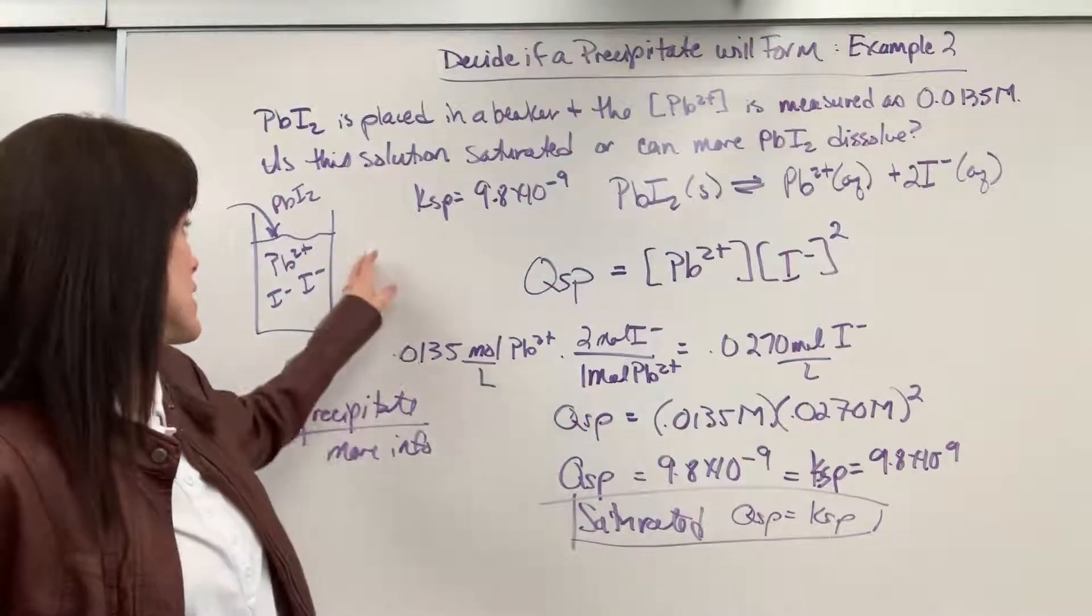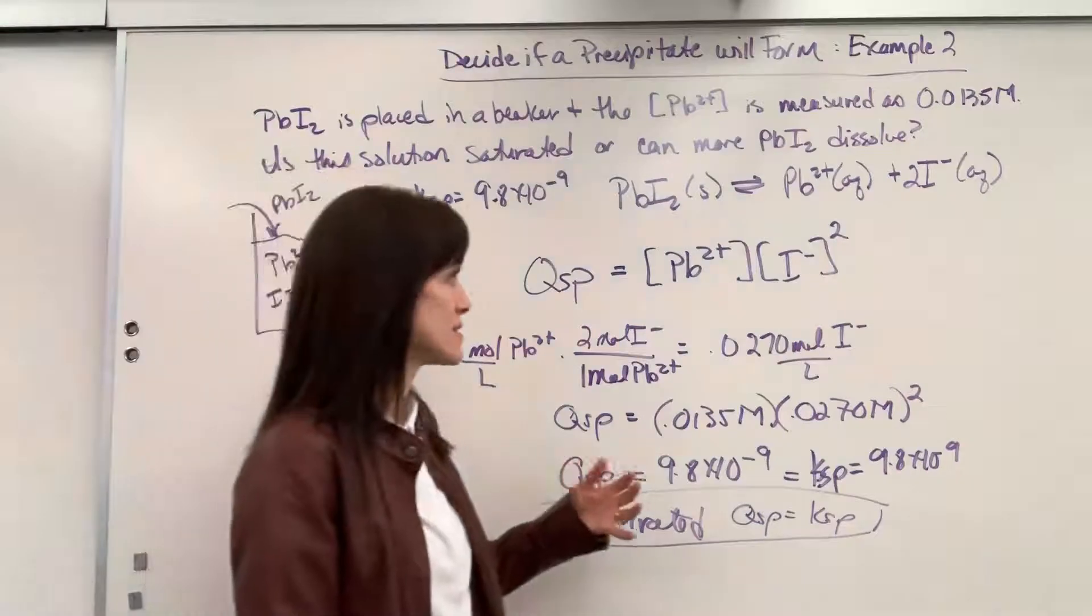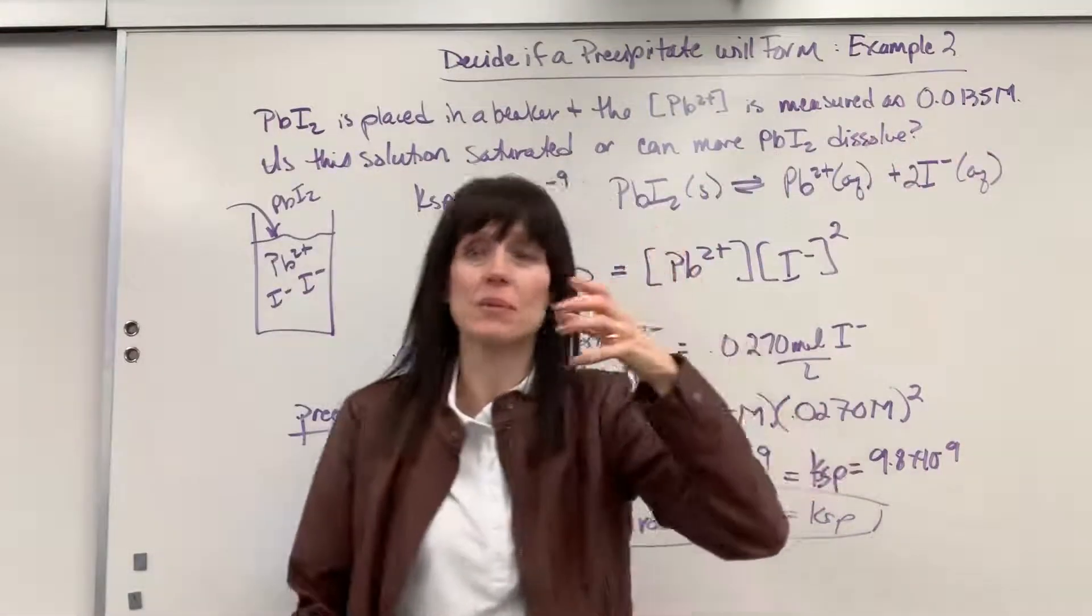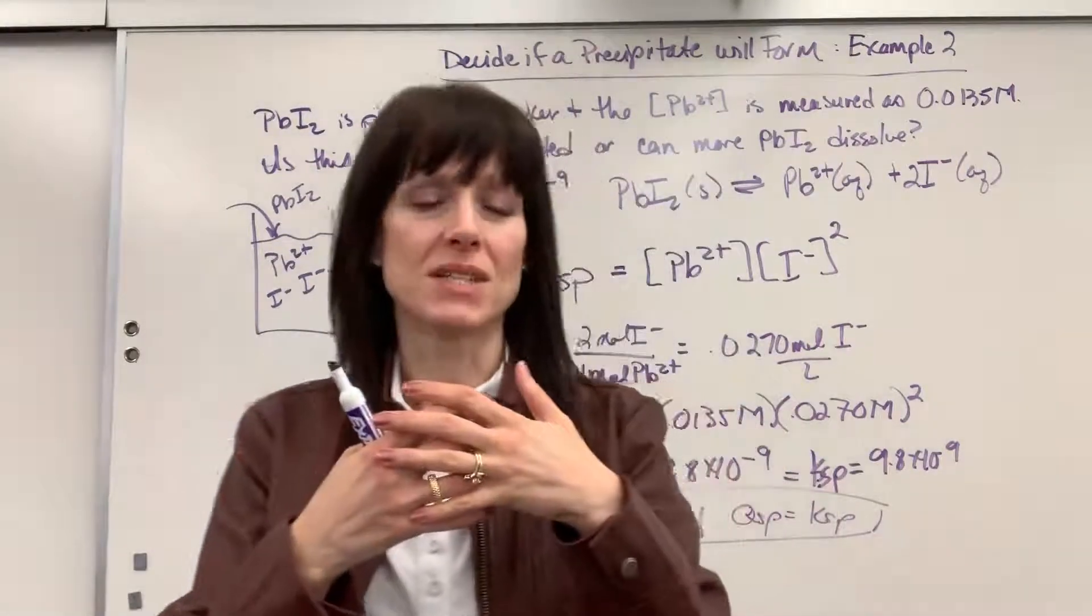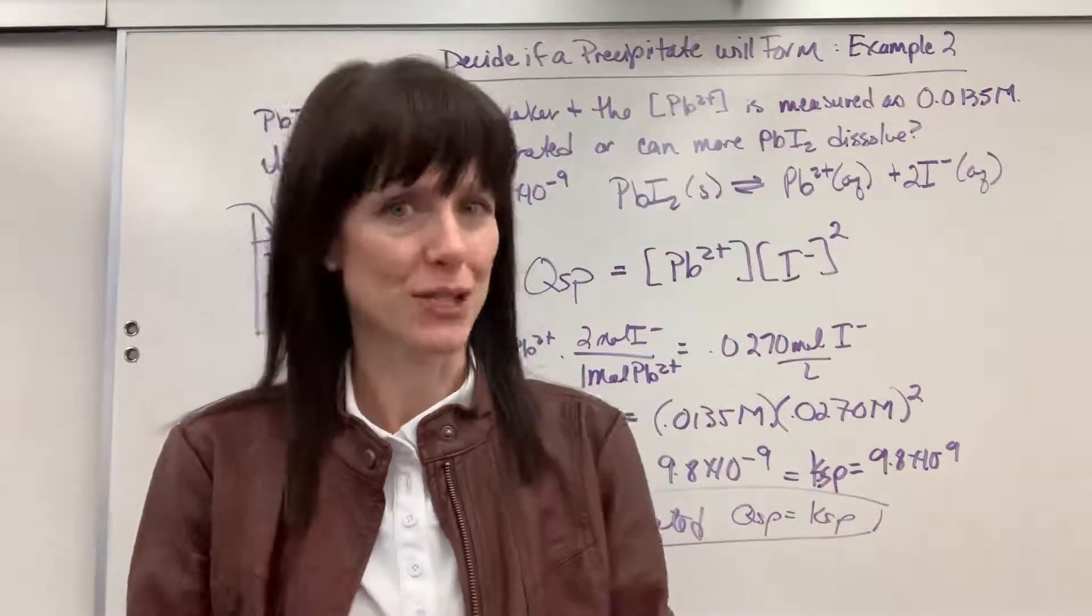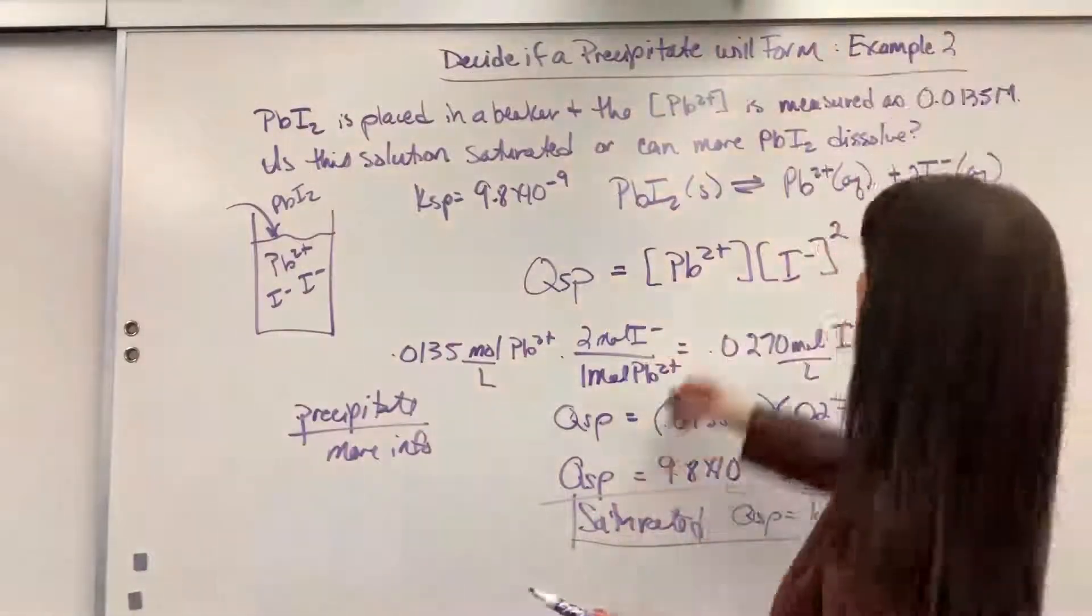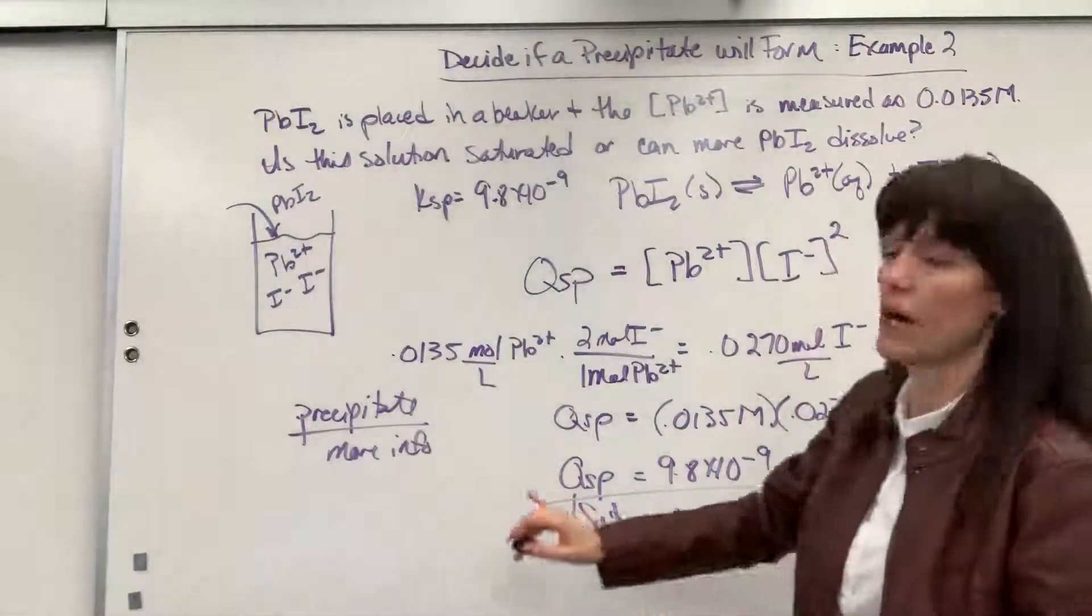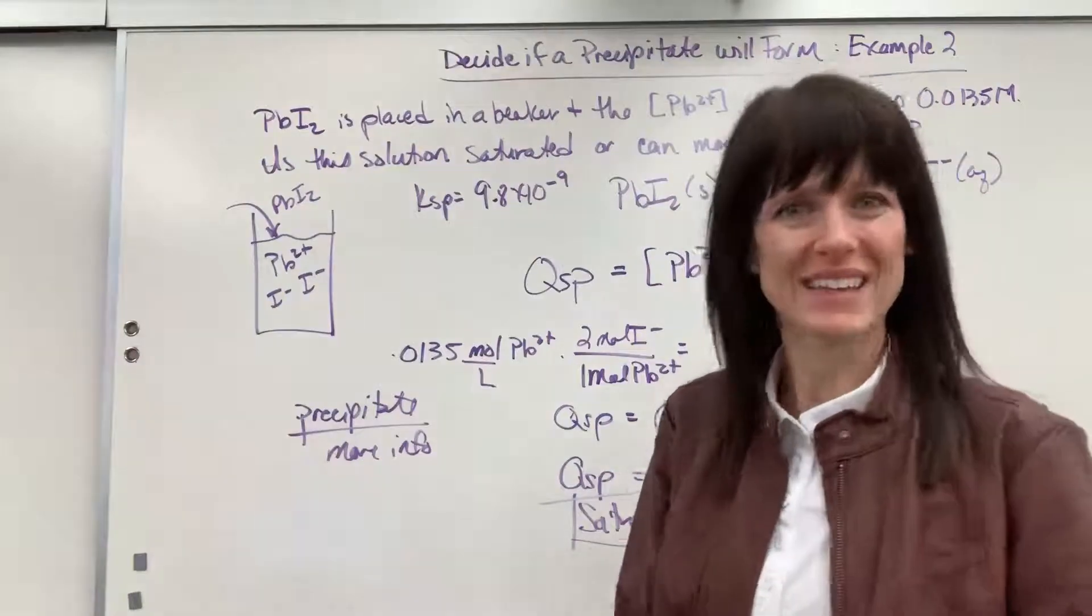We need one more piece of information to know exactly how much they put in there to see if it was beyond, if they actually put in more than that amount. We just know that in the beaker, we have 0.0135. It means it's dissolved the maximum amount, saturated, equilibrium. Okay, good work. If you didn't catch the first example, go to the solubility playlist. Other great helps on solubility in that playlist. Have a wonderful day. Thank you.